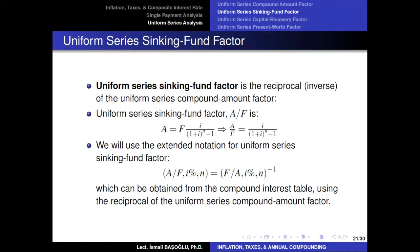We use the extended notation for the uniform series sinking fund factor, defined in parentheses as A over F, under i percent interest rate for N years — the multiplicative inverse of the uniform series compound amount factor in extended notation. When checking the compound interest table, there is no separate column for the sinking fund factor; we look up the compound amount factor and take its reciprocal in the solution procedure.